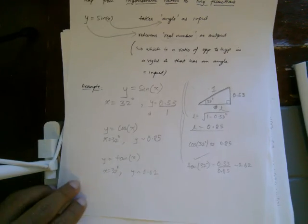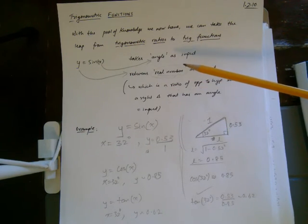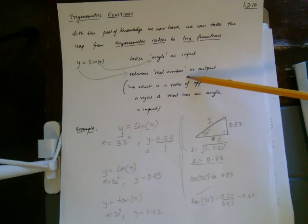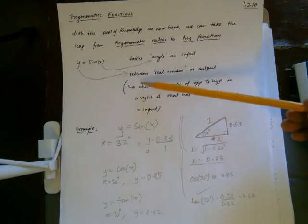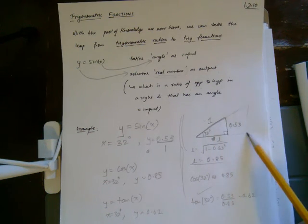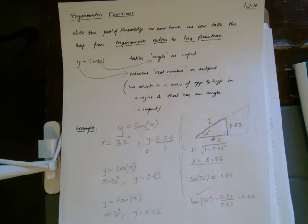What we've established is that by starting from a triangle, we can define these six trigonometric functions on real numbers. They take an angle as input and return a real number as output, which corresponds to a ratio in a right triangle with that input angle. And remember — there are infinitely many right triangles with the same angle of 32 degrees, and they all have the same ratio, making this a powerful tool. This is where we stop for these two videos.